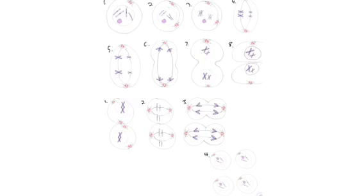There are now two cells, each with the same number of chromatids as the parent cell. Prophase two begins in the second meiotic division.